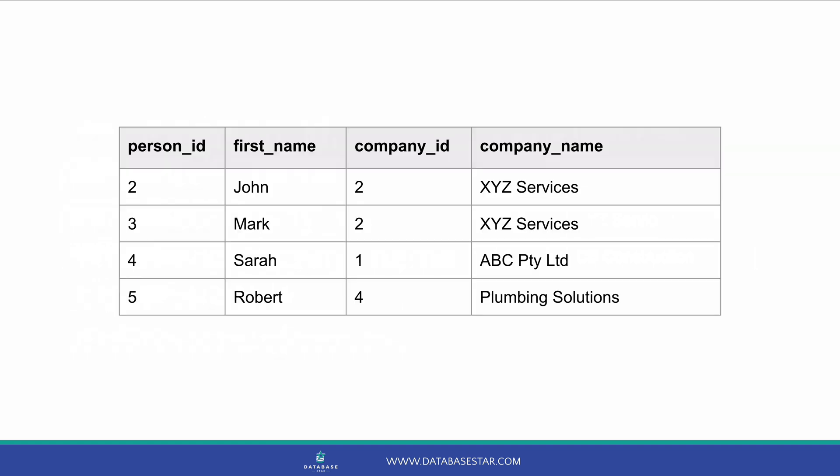Now we can run the query. This should give us the following results. We can see all person records and their matching company records if they have a match, with data from both tables. There are some records that did not show. Person 1, Susan, did not show because they had no company. Company 3 and 5 did not show because they did not have any person records. This is because we used an inner join — that's the power of using a join.